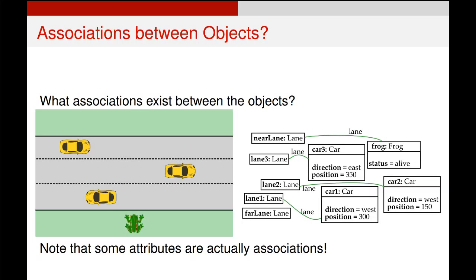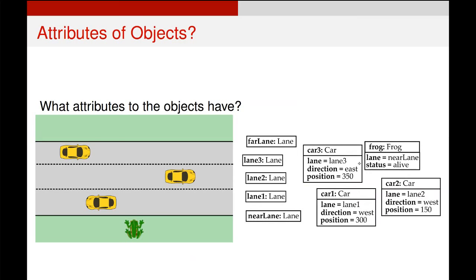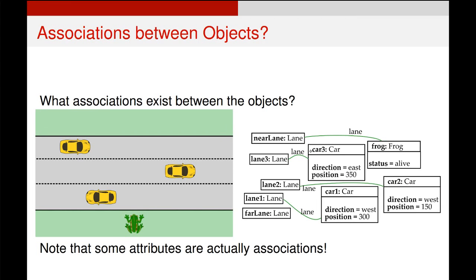But what you have noticed, if you go back to the previous example, is you can see that our lane attribute has disappeared. Where has it gone? Well, it's been replaced by an association, because it turns out that many attributes are actually just associations between different objects. And so what we can do is, instead of including them as attributes, we include them as associations instead.